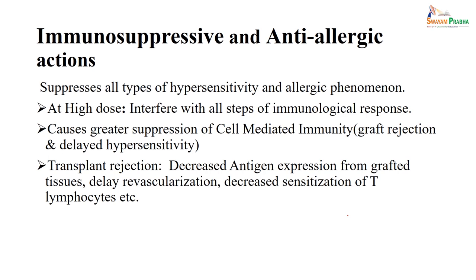The major use of steroid is immunosuppressive or anti-allergic action. At high dose, it interferes with steps of the immunological response and causes greater suppression of cell-mediated immunity. That is how we give steroids to transplant patients — it delays hypersensitivity. In case of transplant rejection, there is decreased antigen expression from grafted tissue, delayed revascularization, and delayed sensitization of T lymphocytes. That is how it acts as an immunosuppressant and anti-allergic agent.